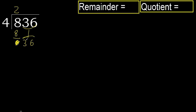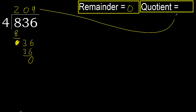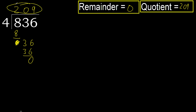There are 2 numbers, so we must complete — always complete with 0 when there are 2 numbers. 36: 4 multiplied by 9 is 36, which is not greater. Subtract, and there is no next number, so we finish. Therefore, 836 divided by 4 equals 209.